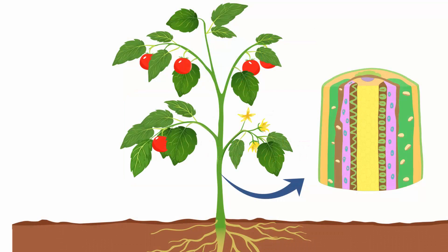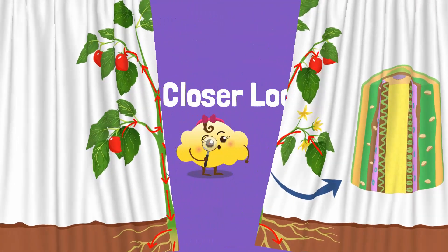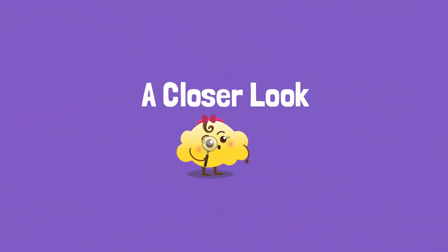Glucose, for example, moves from the leaves through the phloem sieve tubes in the stem to developing leaves, flowers and fruits. It also moves downwards into the growing root tips. Let's take a closer look at how this happens.